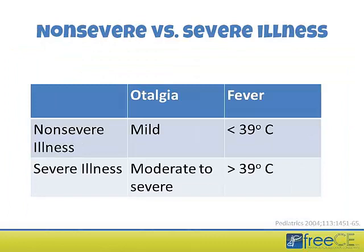Severity classification has not changed since the 2004 guidelines. Non-severe illness is defined as mild otalgia and a fever less than 39 degrees Celsius. Severe illness involves moderate to severe otalgia and a fever greater than 39 degrees Celsius. This classification helps determine whether to prescribe antibiotics immediately or consider the observation strategy.